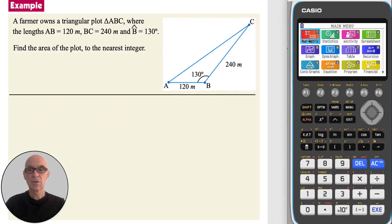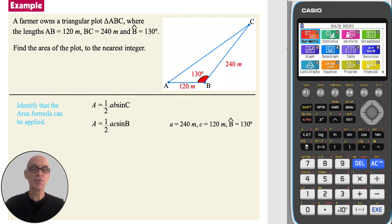In this question, to find the area of the triangular plot shown, identify that the area formula can be applied. The 130 degree angle is between the two given sides. Substituting in the given values and performing the calculation gives the value shown. So the area of the plot is 11,031 meters squared, correct to the nearest integer.